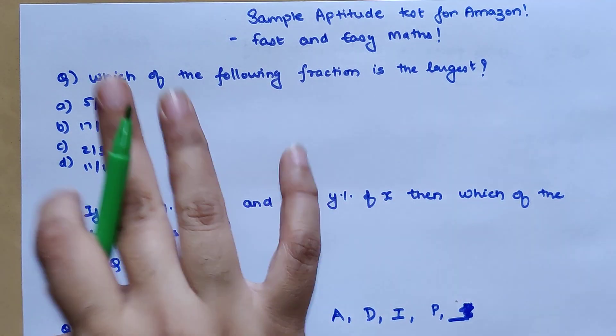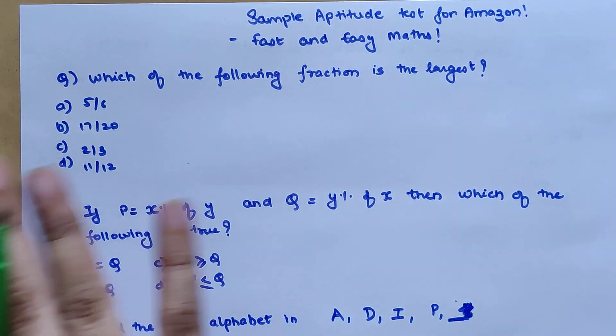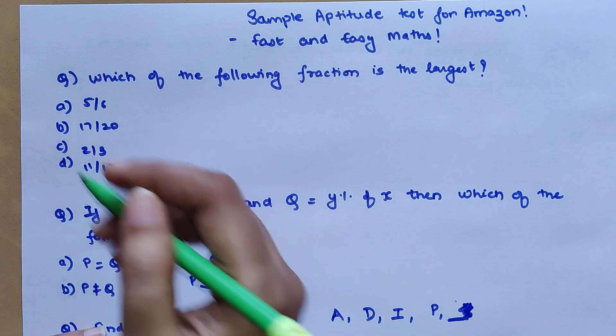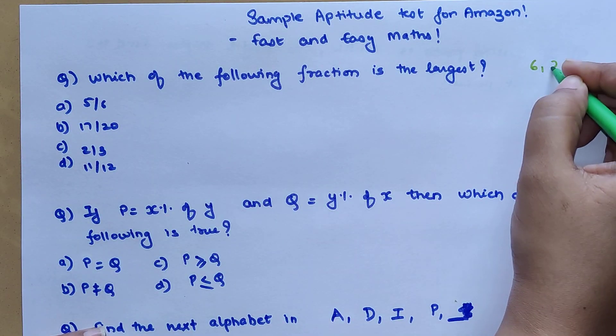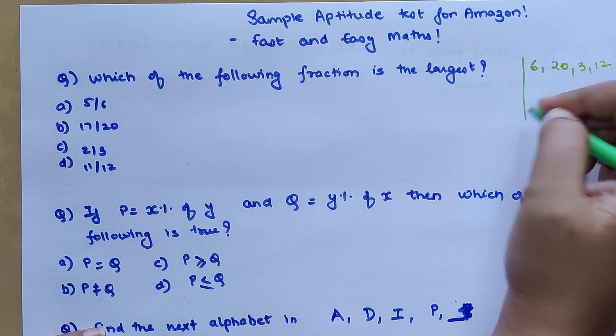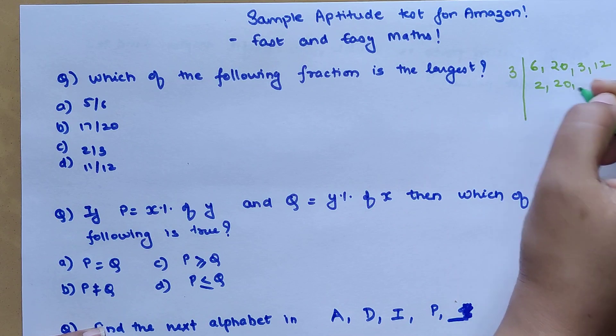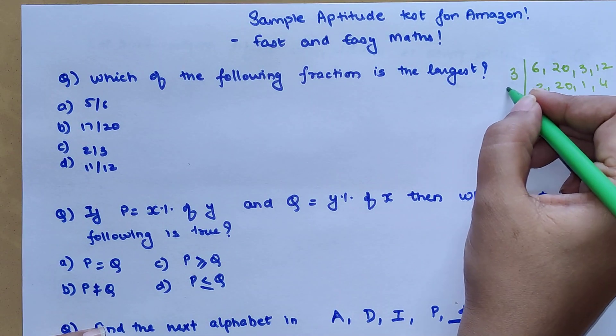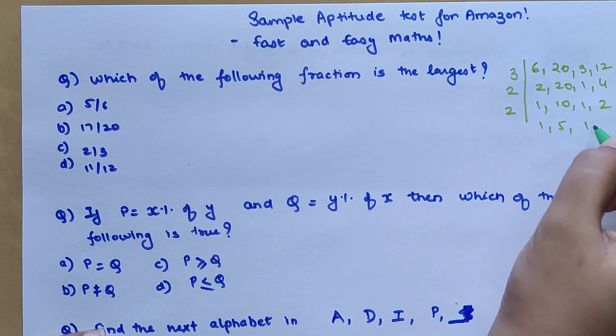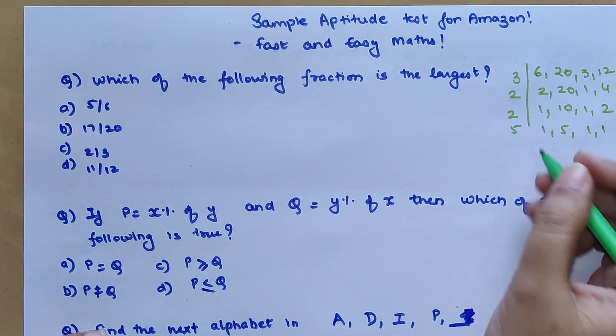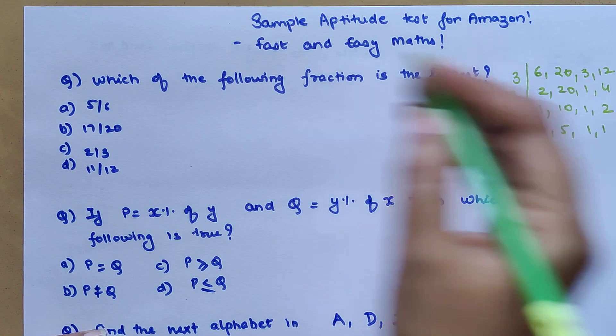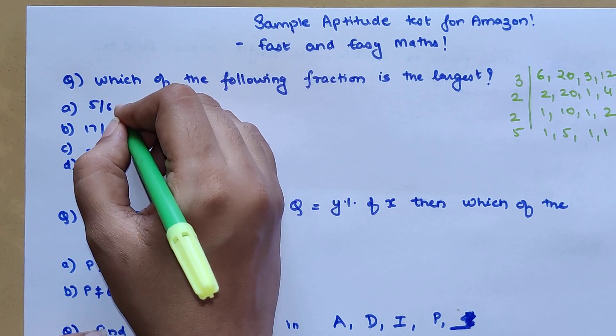If you want all the denominators to be same, you just have to take the LCM. So what you do is LCM of 6, 20, 3, and 12. We have 3, then 2, then 2, then 5. So 3 into 2 is 6, 6 into 5 is 30, 30 into 2 is 60.